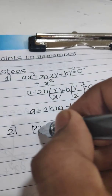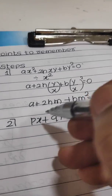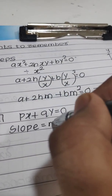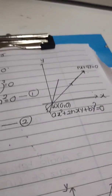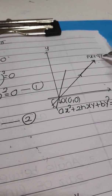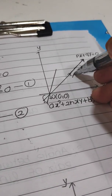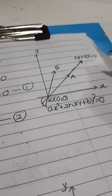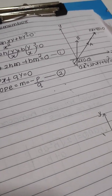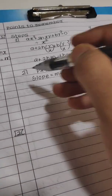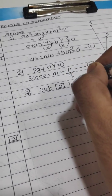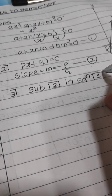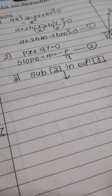Coming back to the diagram, px plus qy is one of the lines. Step 2: from px plus qy equals 0, the slope m equals minus p upon q. Since px plus qy is one of the lines and the lines are coincident or parallel, this slope value is substituted into equation 1. You substitute equation 2 into equation 1, and from there you can solve for any unknown.